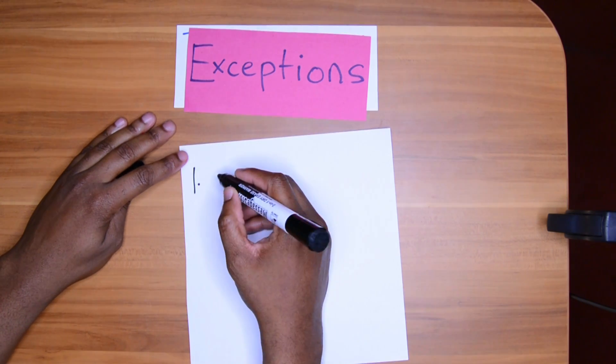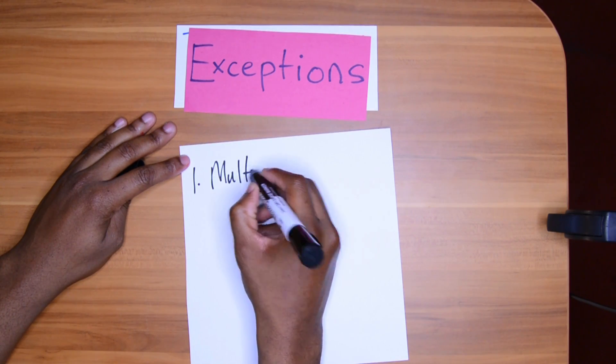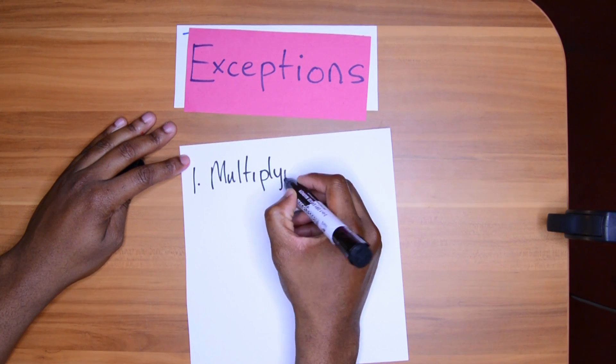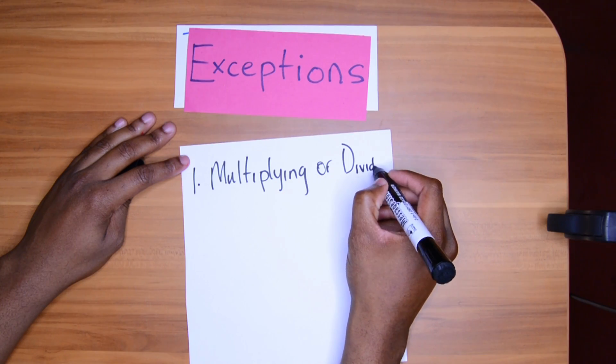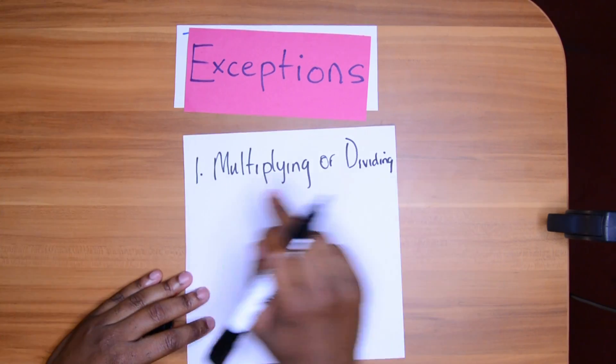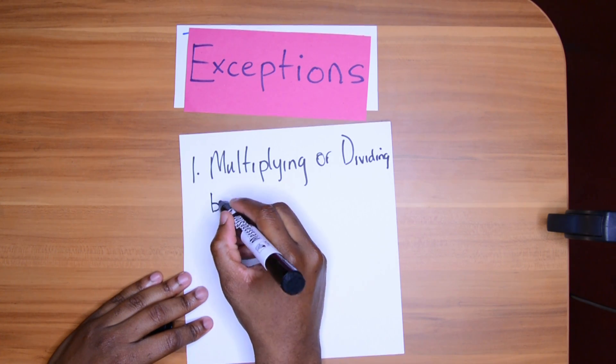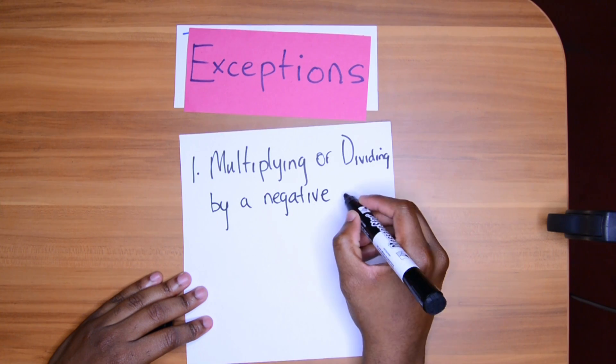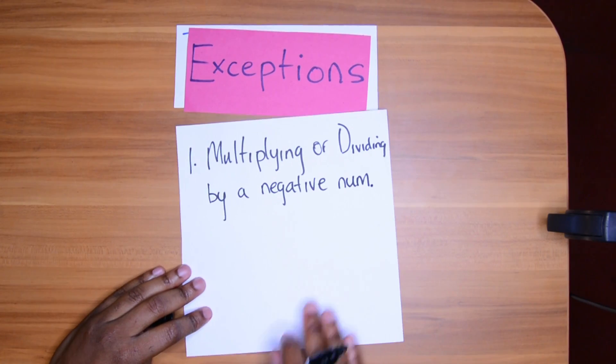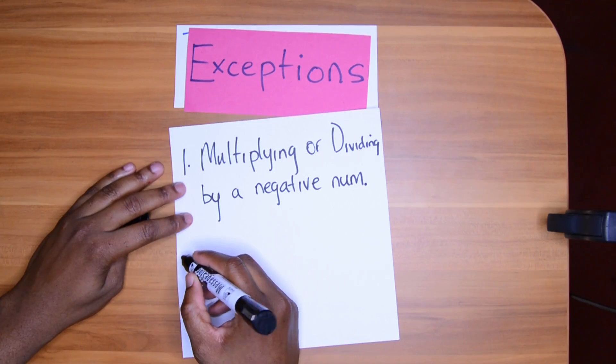Here are the exceptions. Exception number one, multiplying or dividing by a negative number. All right, so if this happens, sign switches.